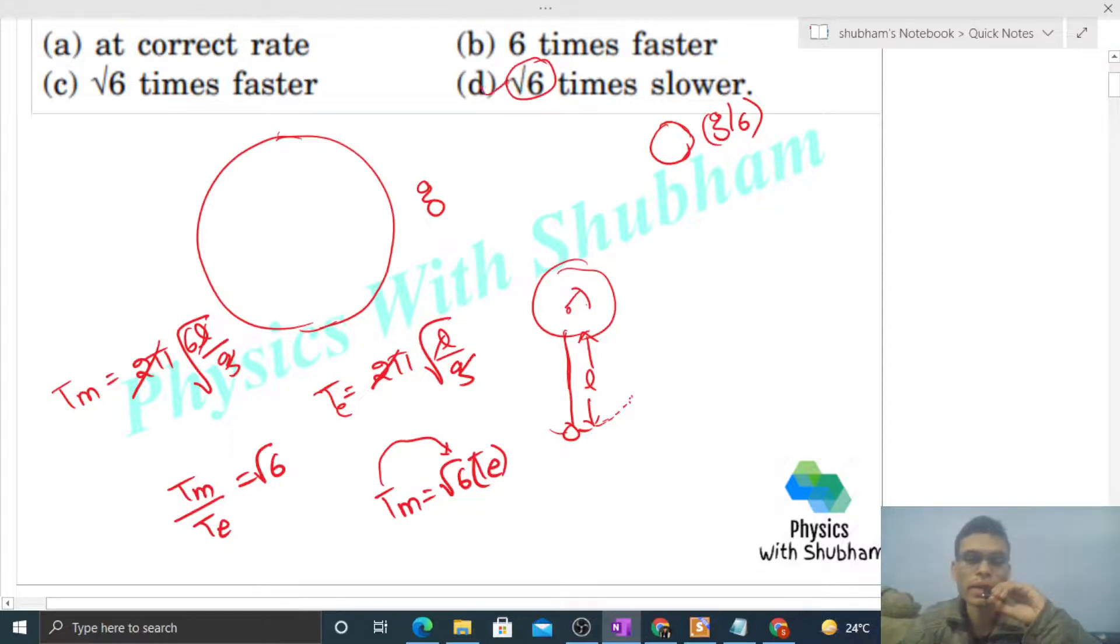It means agar Earth ki surface pe root 6 second ho te hai, then vaha pe Moon ki surface pe kitne second ho ghe? One second. Means itna time dikhaegi ye jo pendulum clock hai, right?